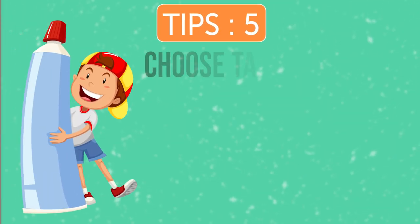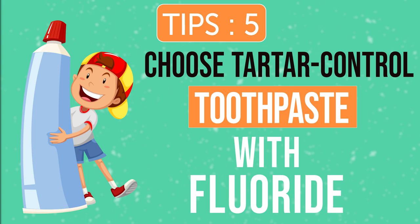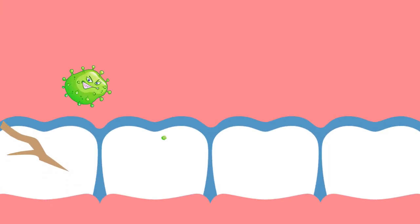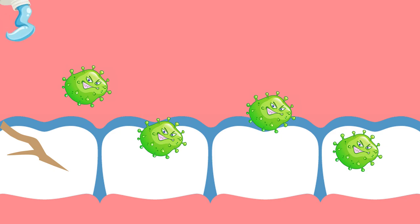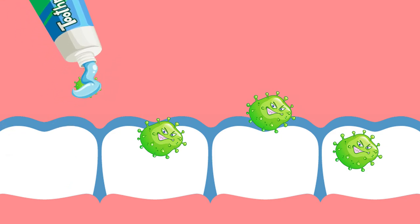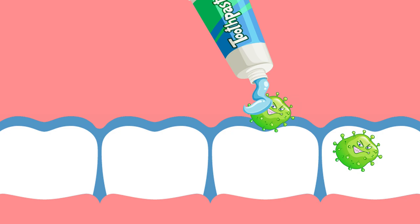Tip 5: Choose Tartar Control Toothpaste with Fluoride. Fluoride will help repair enamel damage. Some products have a substance called triclosan that fights the bacteria in plaque.